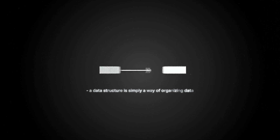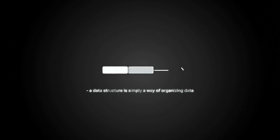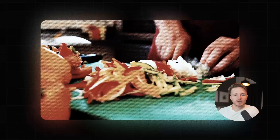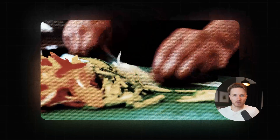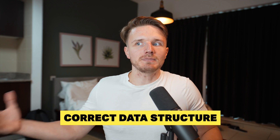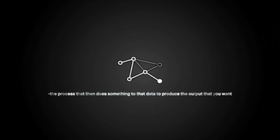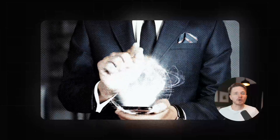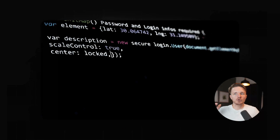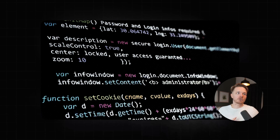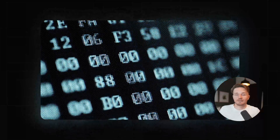Any function or any program that you have, you could have some sort of data that you're dealing with. It's sort of like when you're preparing a meal of vegetables — rather than just directly putting the vegetables in the oven, you first cut the vegetables in the proper way to allow them to cook in the best way. The way you cut the vegetable is like using the correct data structure to get the most efficient program that you can. And the oven is sort of like the algorithm — it's the process that does something to that data to produce the output that you want.